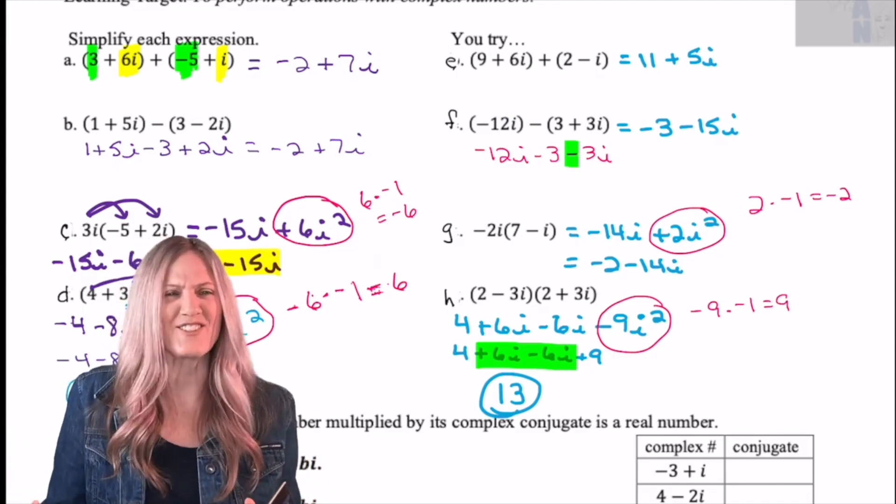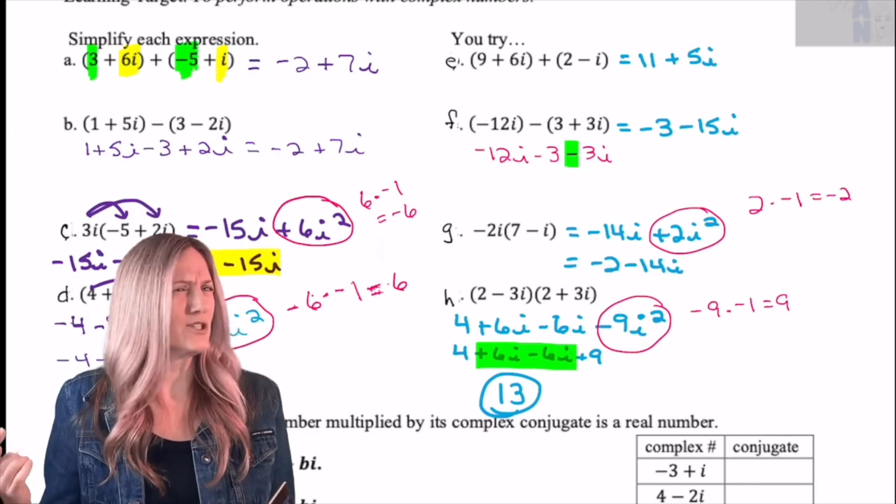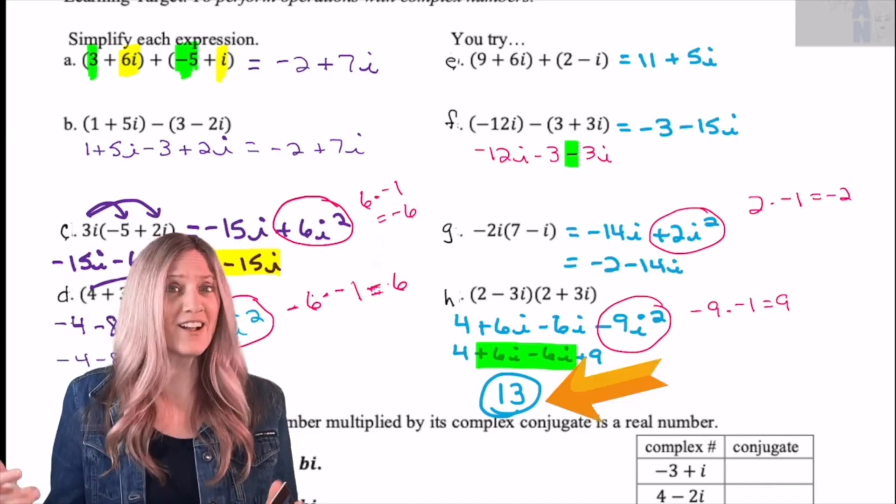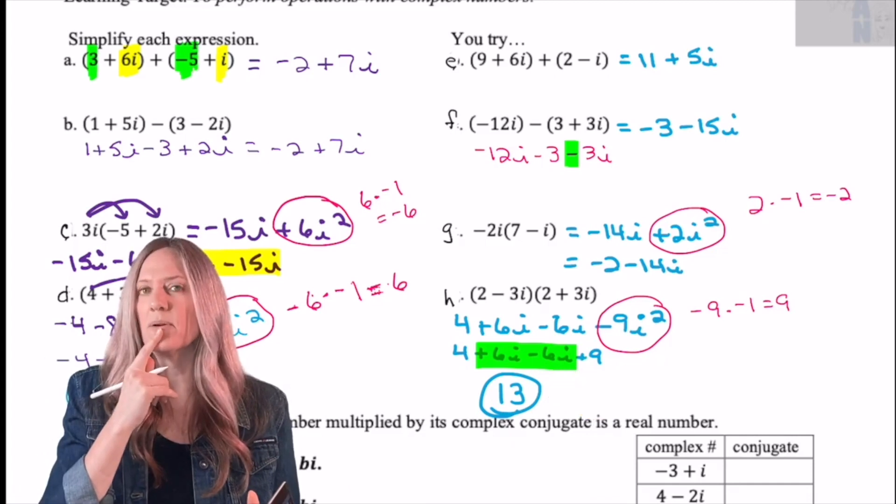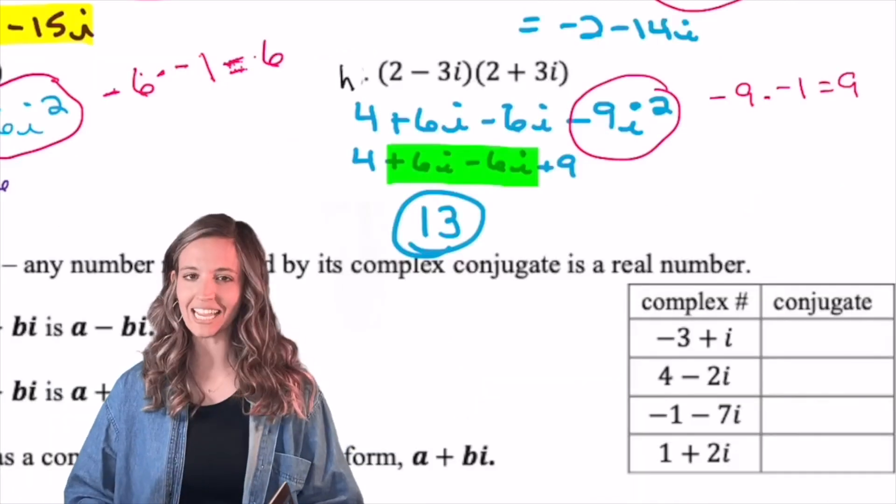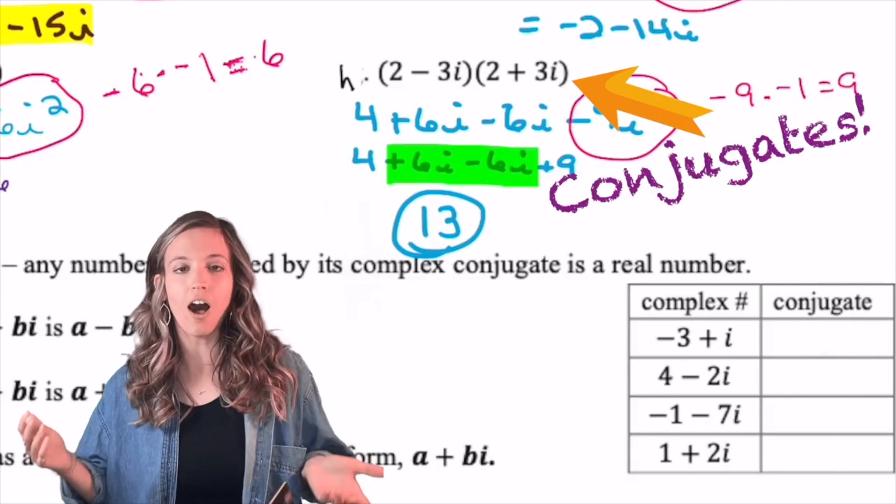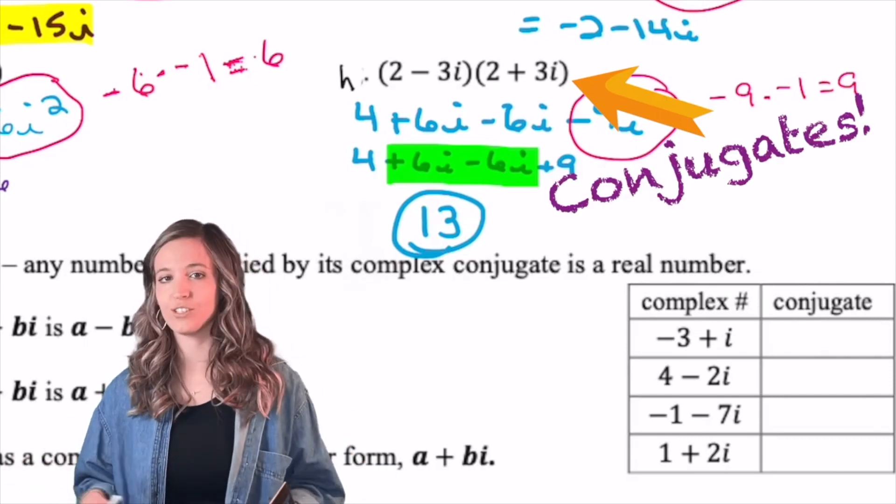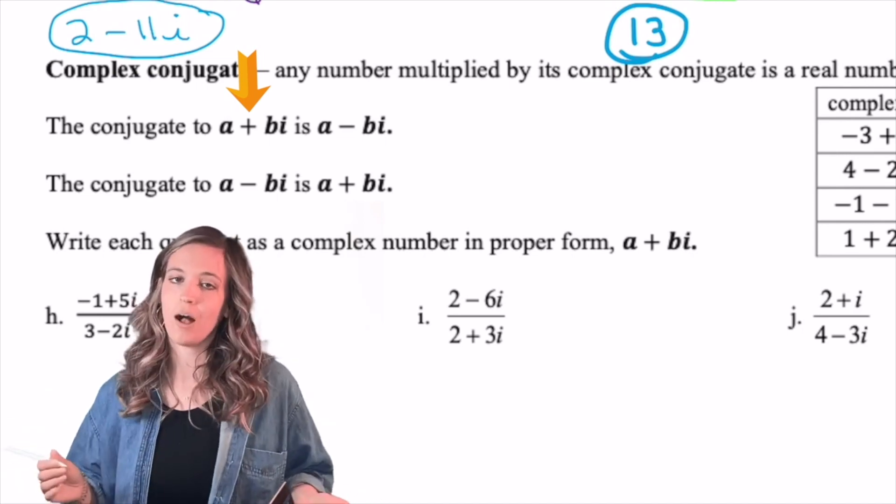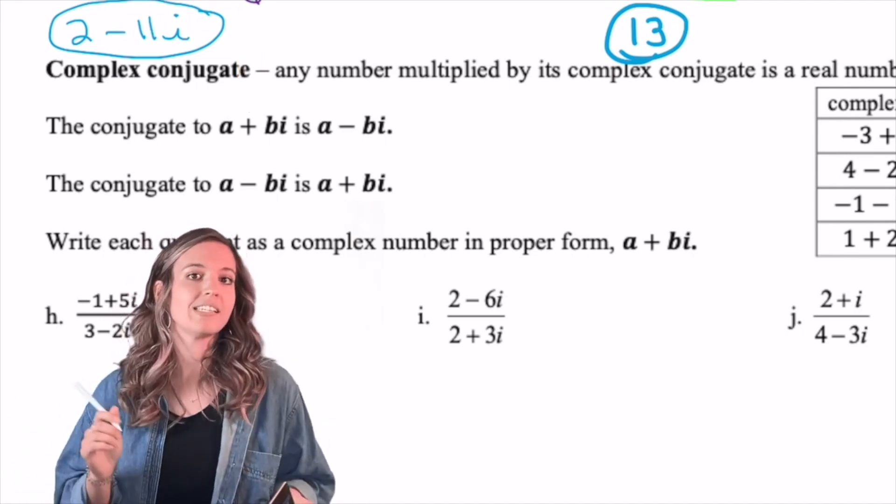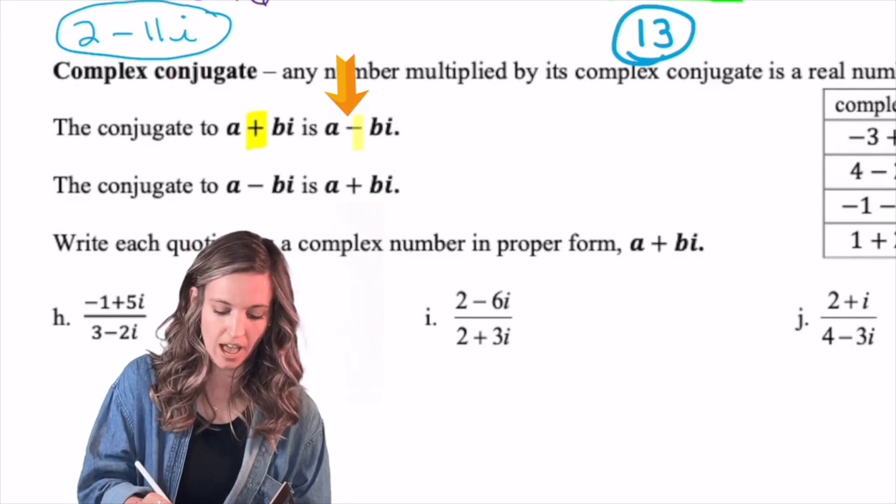But hey, take a look at h. Isn't that so cool? We multiplied two complex number binomials and got a real number. I wonder how this could be useful. Well, h, those two binomials were conjugates of each other, complex conjugates, so we ended up with a real number. So if we have a + bi as our complex number, then its conjugate is a - bi. We just changed the middle sign. If we have a - bi, then its conjugate is a + bi. We just changed the middle sign.